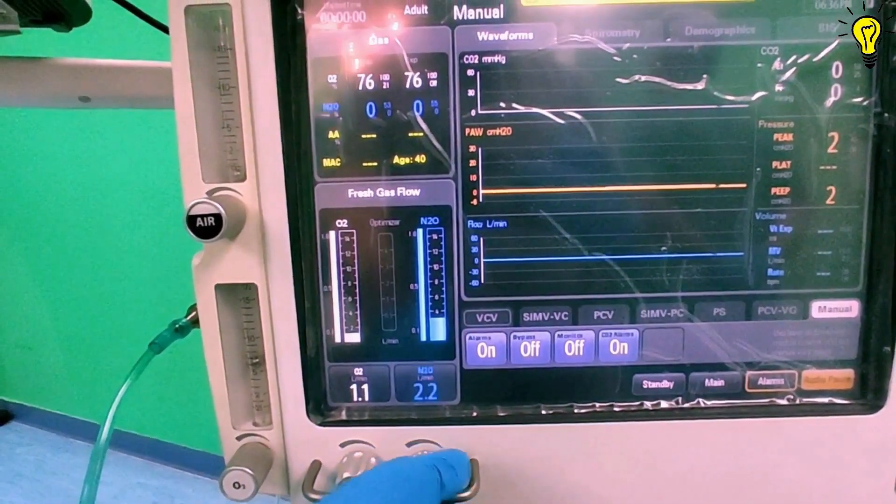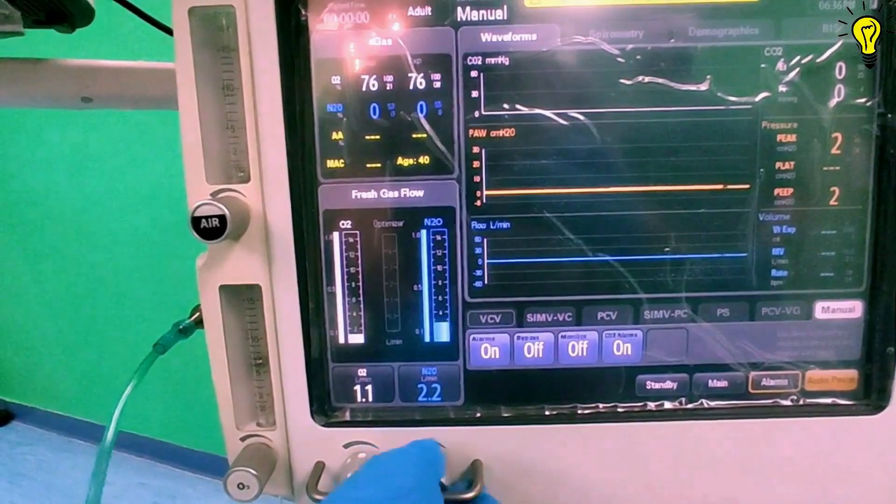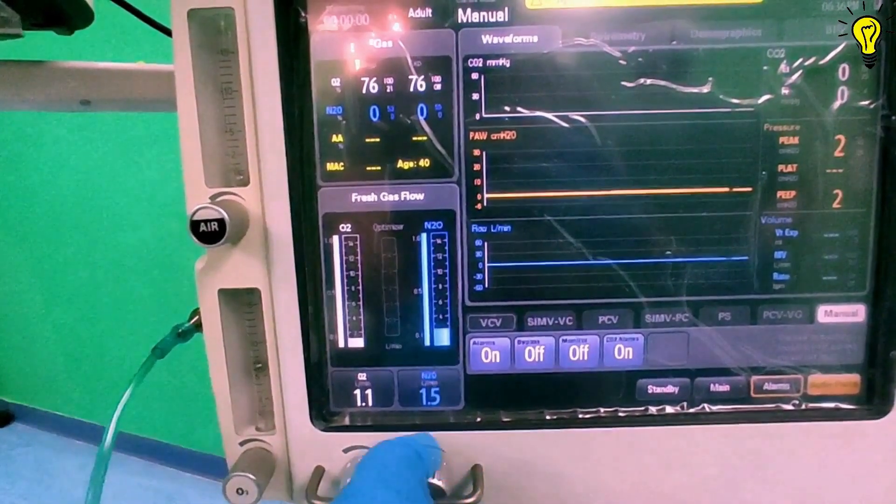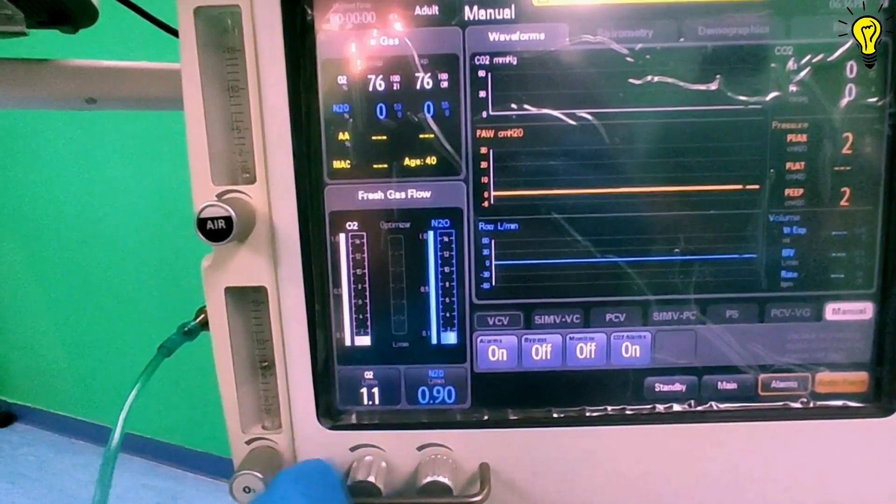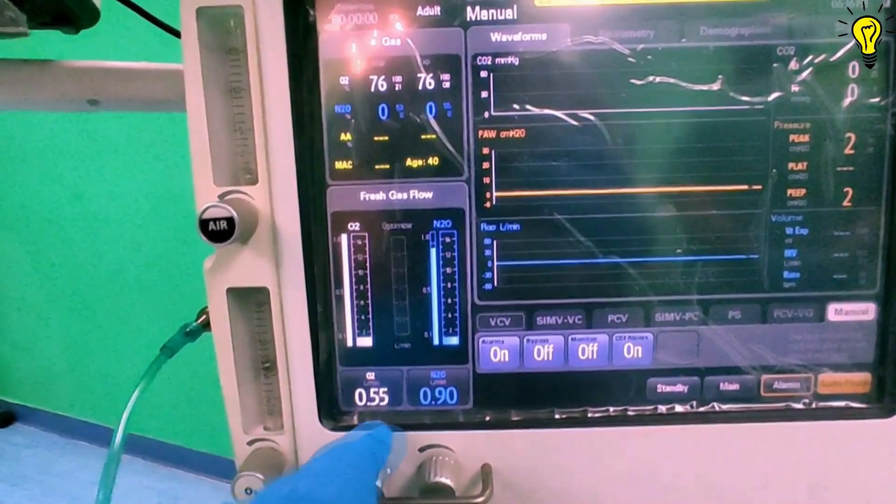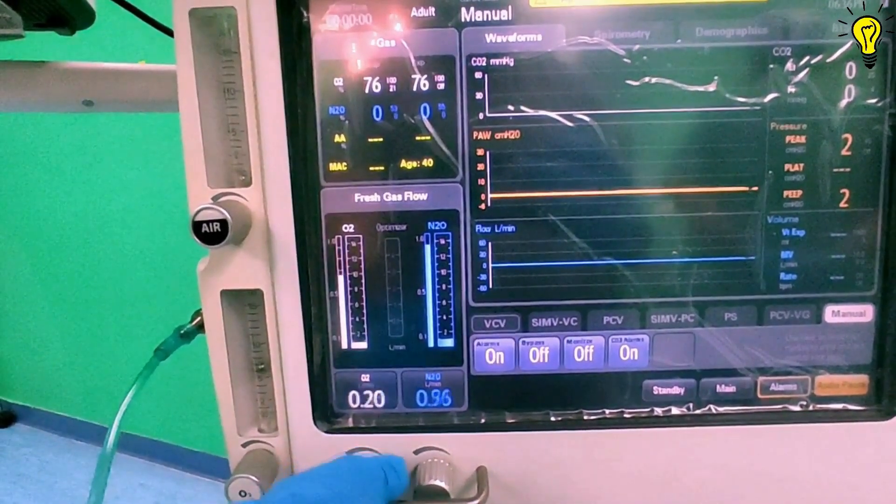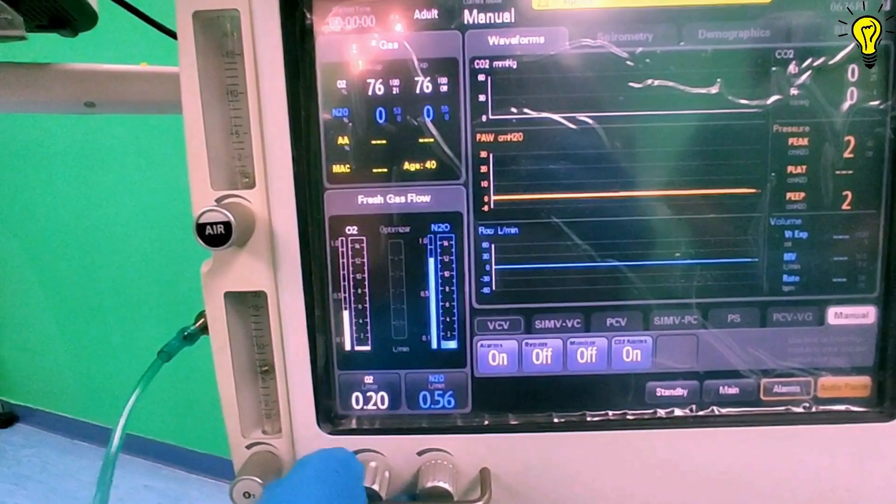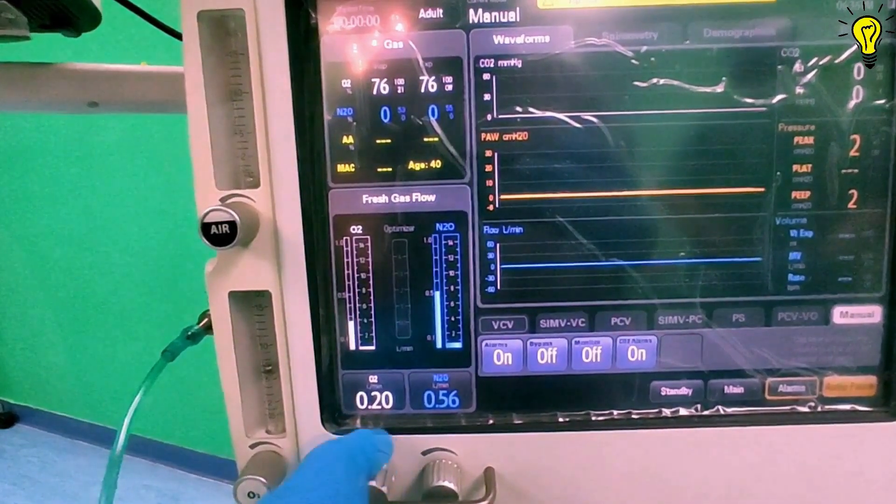So the SORC of Dragger stopped nitrous from increasing further. But the ORC of this Mindray machine instead lets us increase the nitrous but also automatically increases the oxygen. Overall, the key being ORC maintains this ratio at 3 ratio 1, minimum.